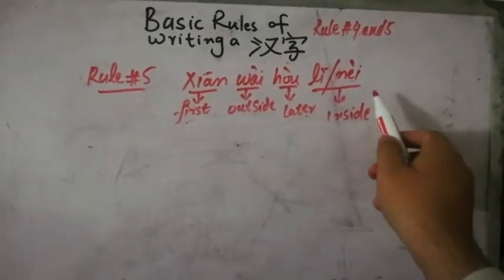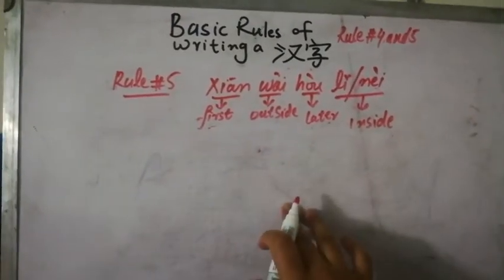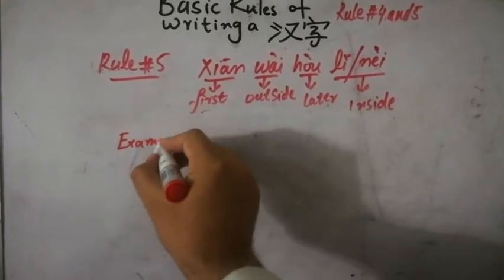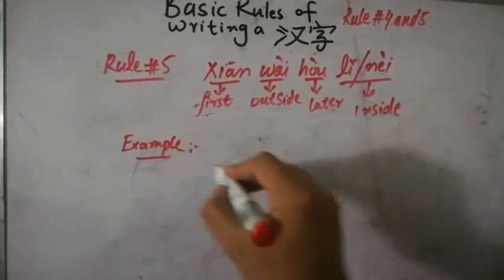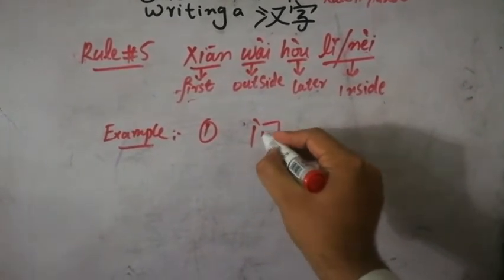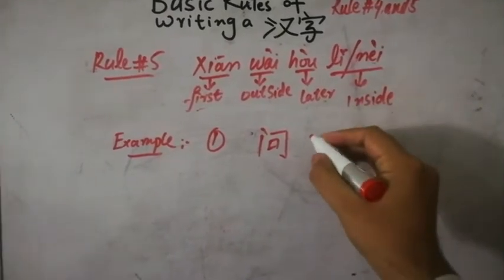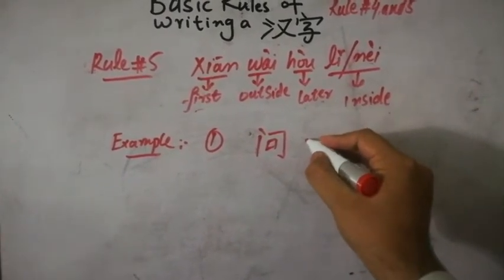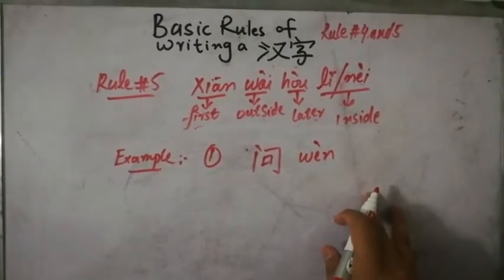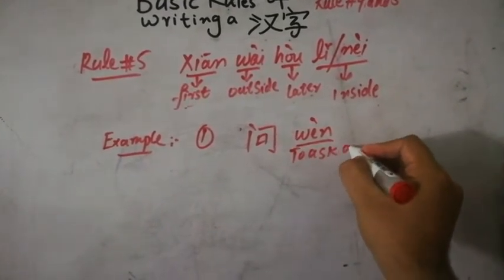Lǐ, nèi. Lǐ, nèi. So what could be the examples for us? First example could be, you see, 问 wèn, wèn, wèn means to ask a question. I can ask you a question. Can I ask you a question?